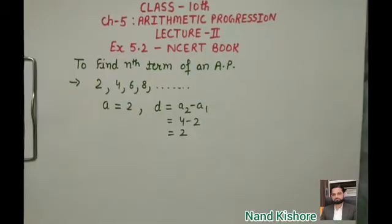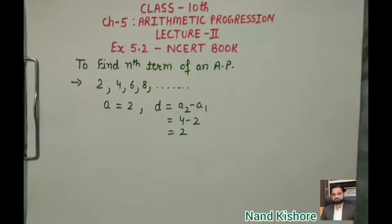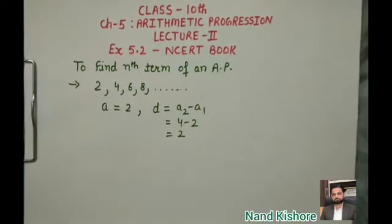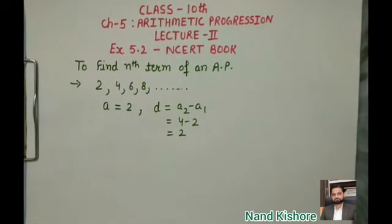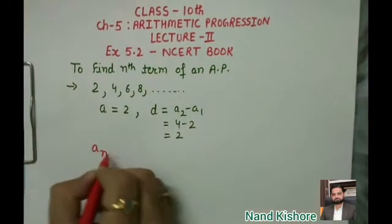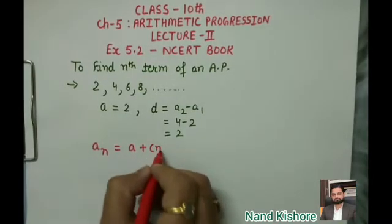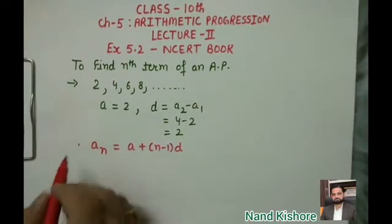Today we are going to study Exercise 5.2 from the Arithmetic Progression chapter of the Class 10 NCERT book — specifically how to find the nth term of an AP. For this, we are going to learn one formula: a_n equals a plus n minus 1 into d.